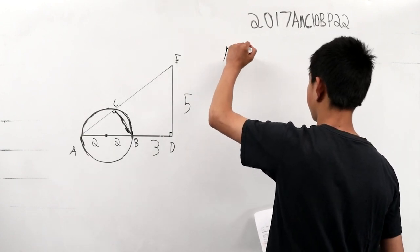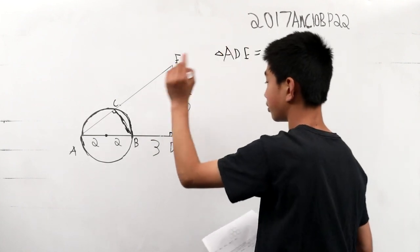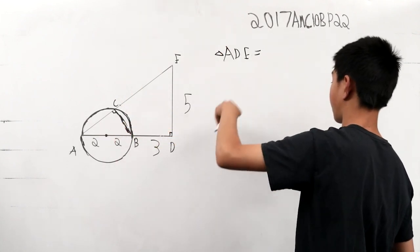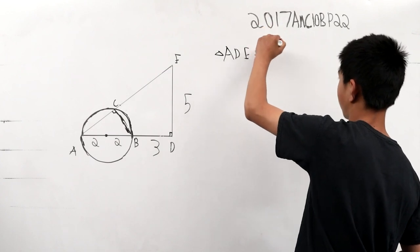Triangle ADE is equal to 7, the bottom, times 5 over 2, 35 over 2.